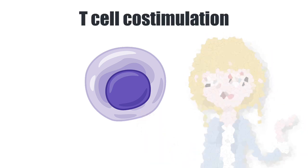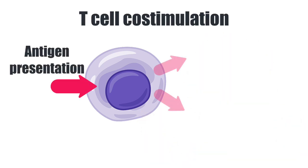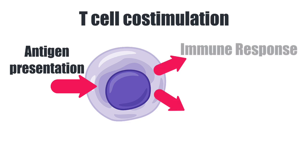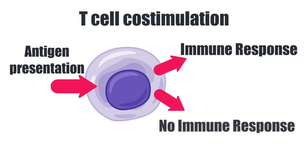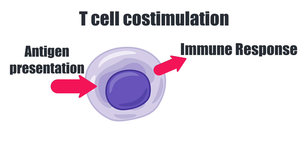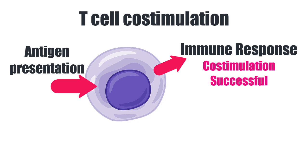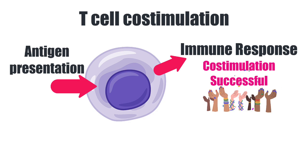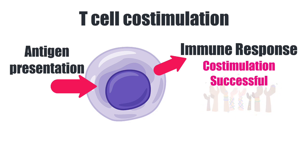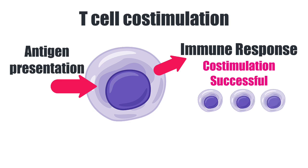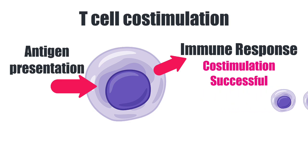Whenever a T-cell is presented with an antigen, one of two things will happen: an immune response or no immune response. If an immune response does happen, it means that there has been successful co-stimulation, where a series of signaling molecules get together and basically cheer on the T-cell. And with all of this encouragement, the T-cell proliferates to create an army of T-cells which go forth in an immune response.